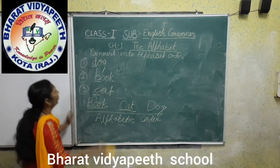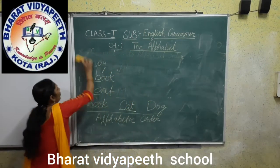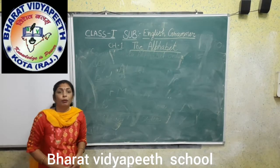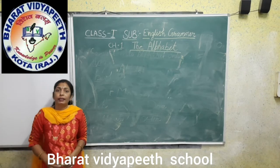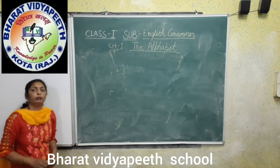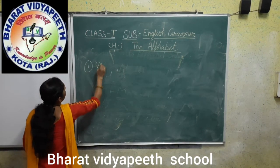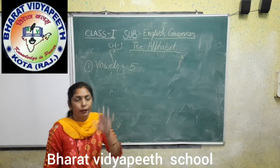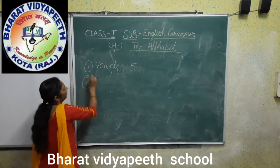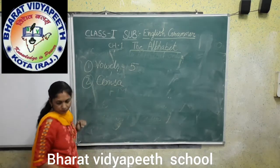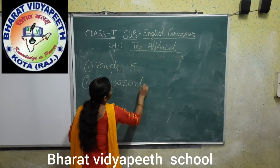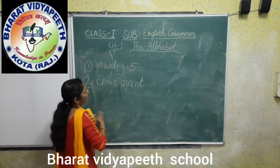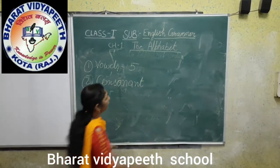Now, consonants. In the last class, how many alphabets are there? 26 alphabets. The alphabet is divided into two parts: vowels and consonants. How many vowels are there? Five. How many consonants are there? 21.